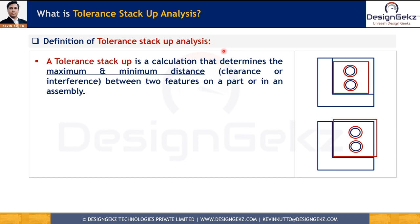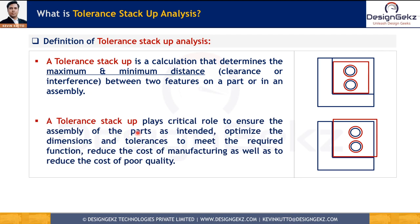Tolerance stack-up analysis is a calculation which determines maximum or minimum clearance or interference between two features on a single part or multiple features in an assembly. A tolerance stack-up analysis helps us verify if the part meets its intended function — like gap, flushness, or interference requirements — and optimize the dimensions and tolerance values to meet the function, reduce manufacturing cost, and reduce overall cost of poor quality by ensuring most parts meet their intended function.